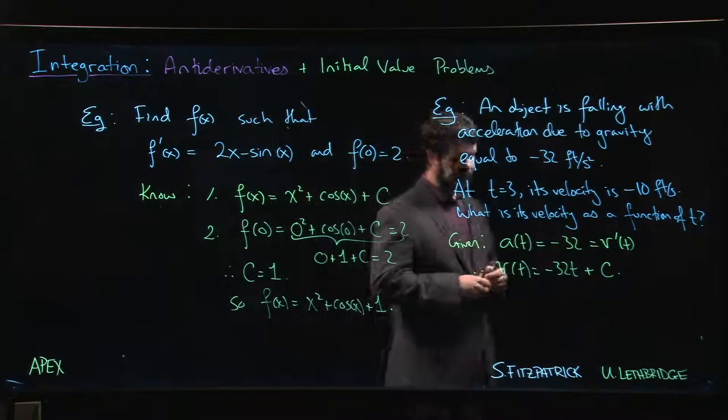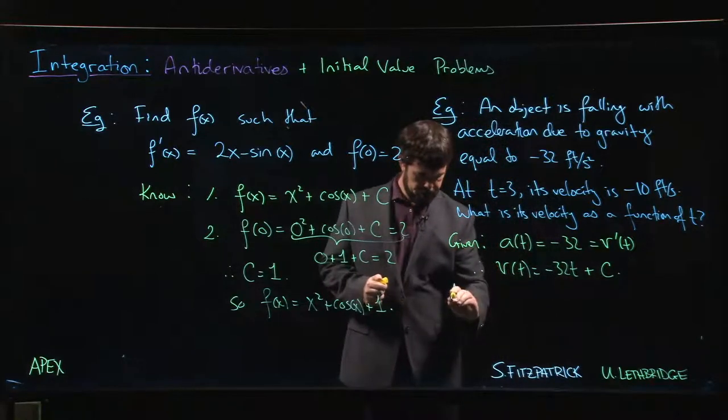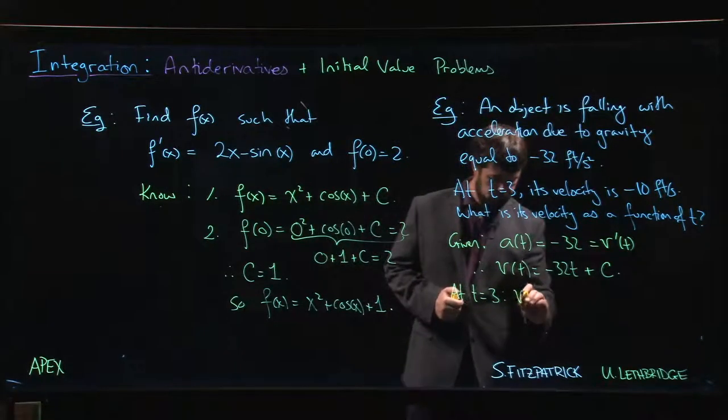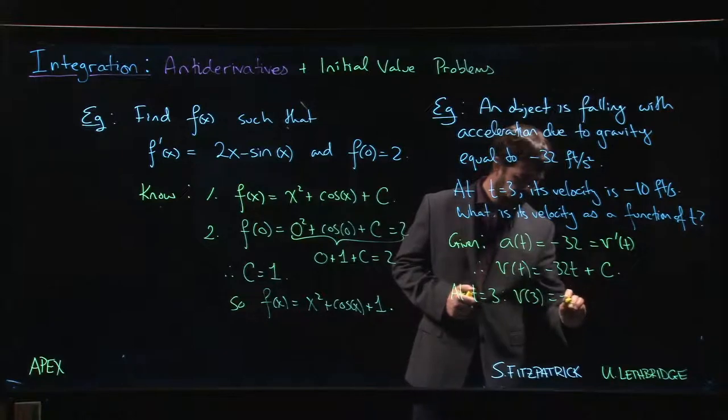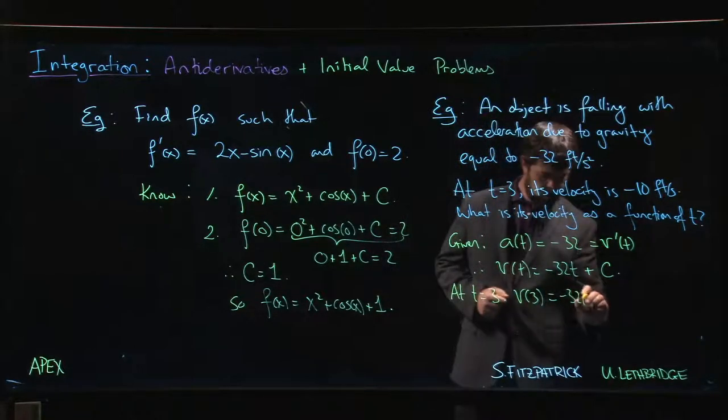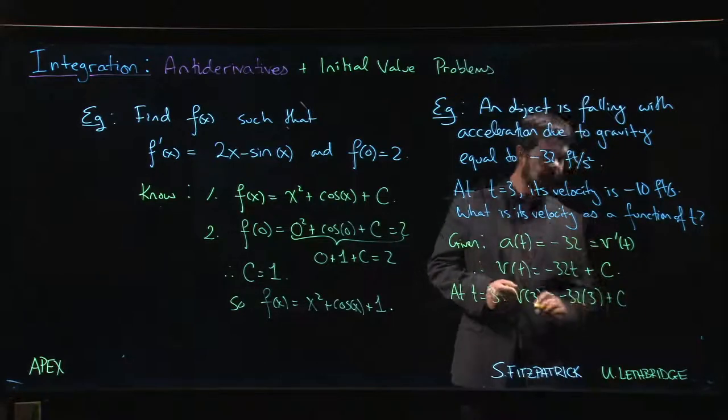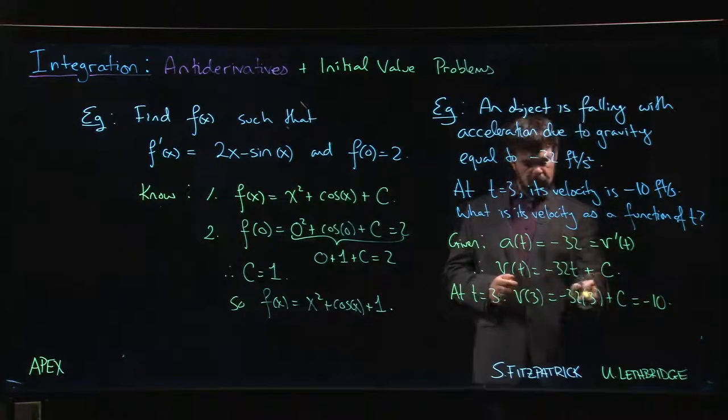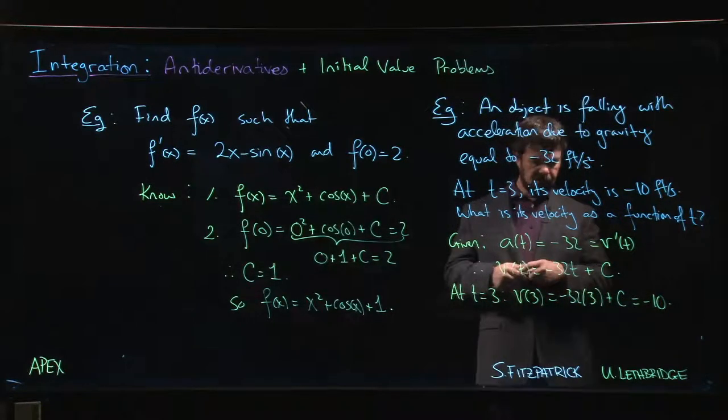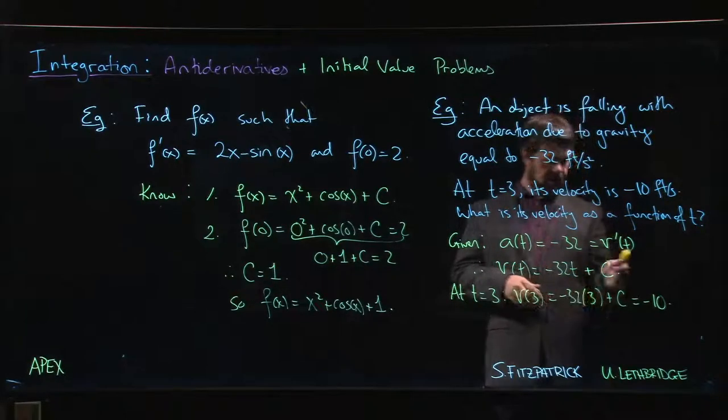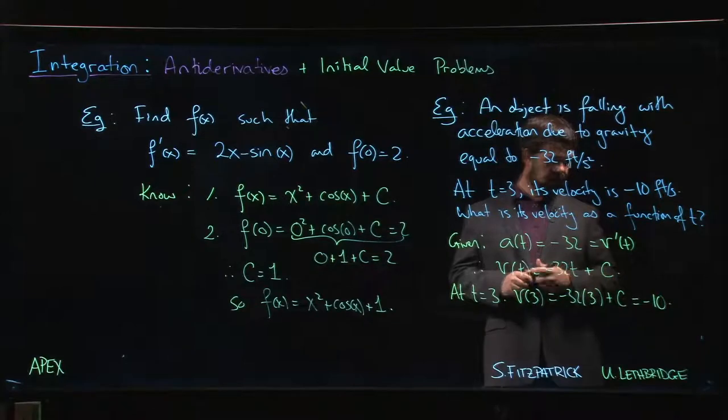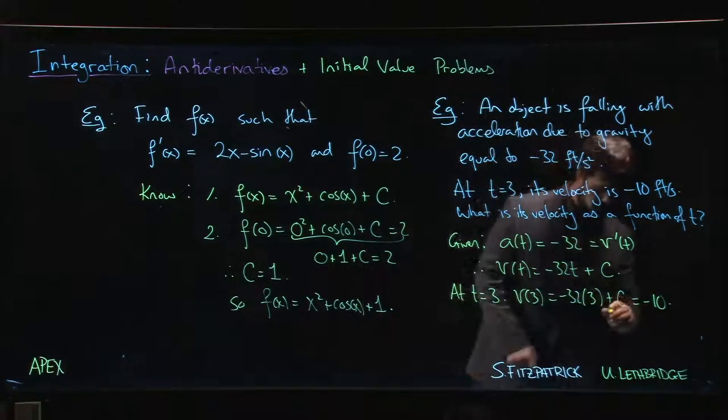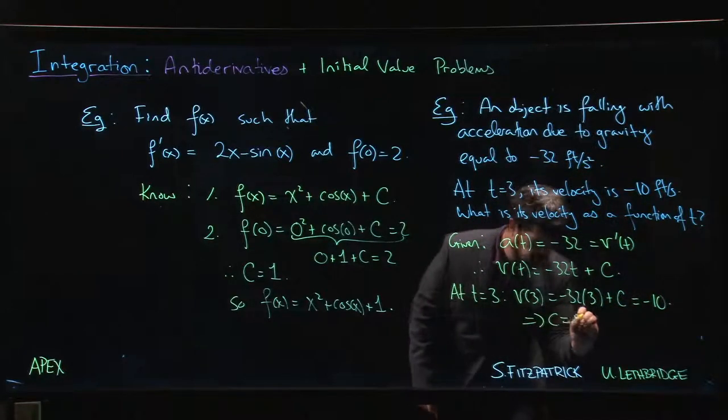So we can put that information in: v of 3 is minus 32 times 3 plus C, and we want that to come out to give us negative 10. We work that out: 3 times 32 gives us 96, move that to the other side, we add 96 to negative 10, we get 86 for C.